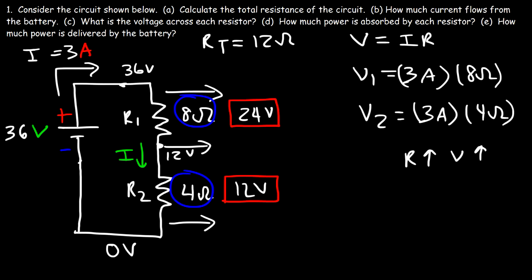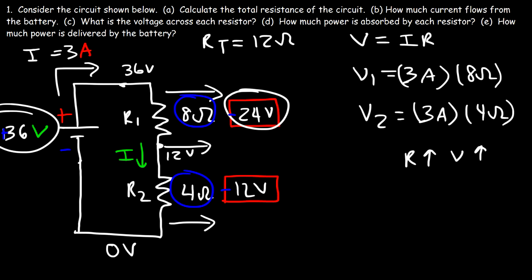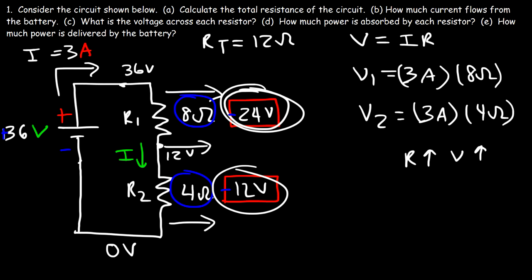Voltage is related to energy but depends on the amount of charge you're dealing with. Notice that the voltage drops are equal to the voltage of the battery. This is associated with Kirchhoff's voltage law, which states that the voltages around a closed circuit must add up to 0. The battery gets a positive voltage because it increases the energy of the charges; resistors get a negative voltage because they decrease it. So 36 plus negative 24 plus negative 12 adds up to 0.